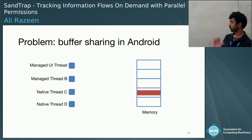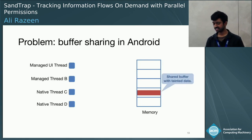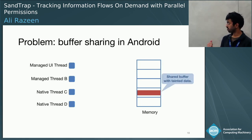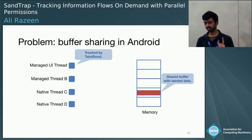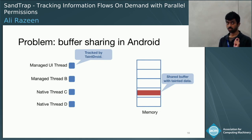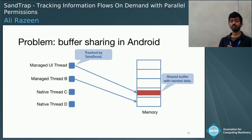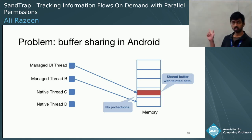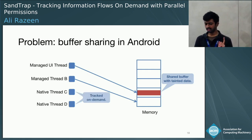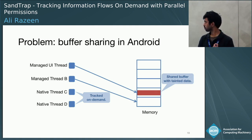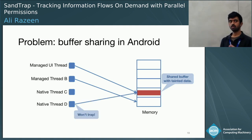This problem also appears in a slightly different context. The top two threads are running managed code or Java bytecode; the bottom two threads are running native code via the JNI. On the right there is a buffer with tainted data shared between both managed and native code — an access pattern we have observed in real Android apps. We rely on TaintDroid to taint track the managed portion of the app, so if managed threads access tainted data, that's okay. We do not want any protections on this page for managed threads. However, the native threads are tracked on demand and not constantly. If they were to access tainted data at this moment, it's not going to trap — the same problem as before.